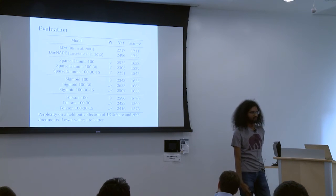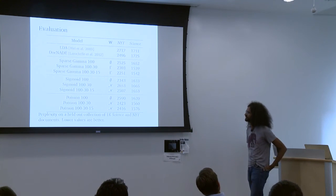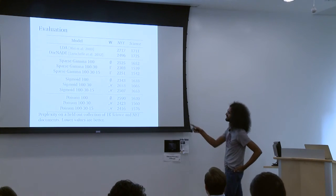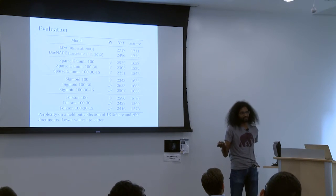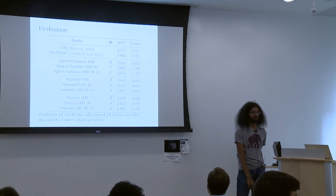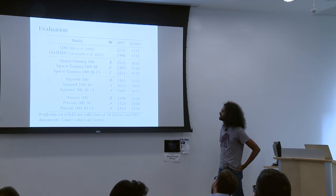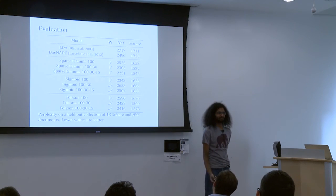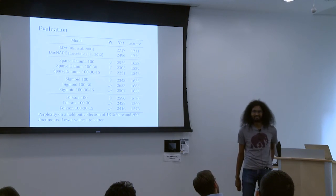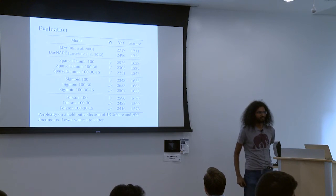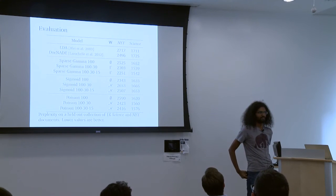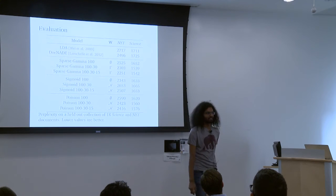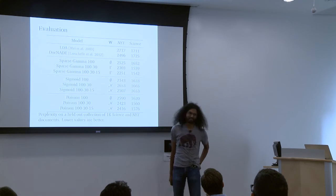Have you applied this in other settings besides text? The other setting we applied this to is recommendation systems — looking for this kind of hierarchical structure in groups of documents people click on. How did you settle on 100-30-15? We chose 100 because that's the most common dimension in the literature. The other numbers were chosen because we thought smaller was better — there's no strong reason. A 500-point difference in perplexity is noticeable, and even relative to DocNADE it's noticeable.